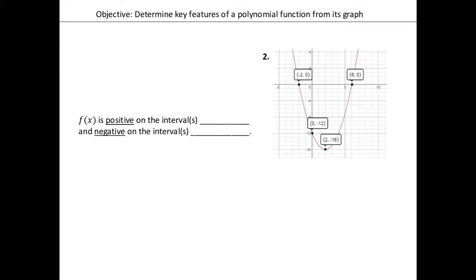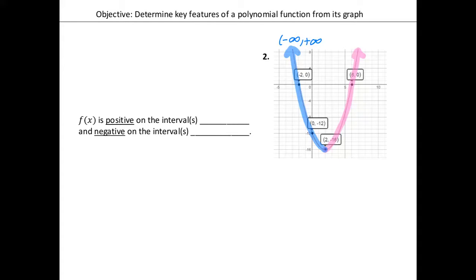So let's try number two together, since we only got to number one. You should have had some stuff already highlighted. For example, my increasing was in pink yesterday, and then I had the decreasing in blue. And then we had our fake coordinate points up here — that was negative infinity, positive infinity. And then this one, we had positive and positive infinity. That's what you should have so far on your graph.